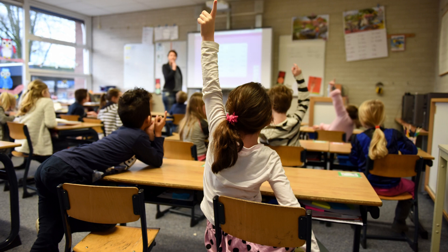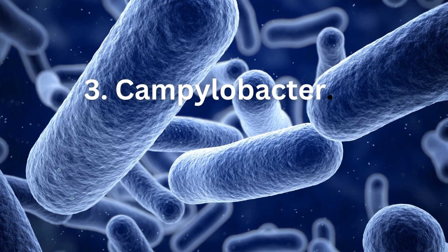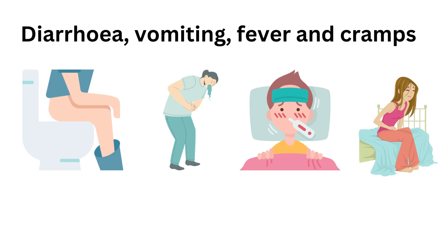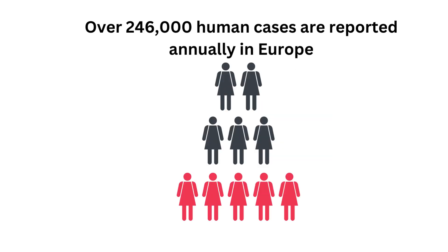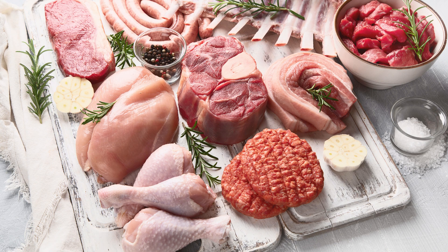The third group of bacteria causing gastroenteritis is Campylobacter. When it affects humans, the infection is accompanied by diarrhea, vomiting, fever, and cramps. Over 246,000 human cases are reported annually in Europe, but the actual estimate is believed to be close to a million. Most Campylobacter infections are acquired by eating raw or undercooked poultry, contaminated meat and produce, by contact with animals, or by drinking untreated water.